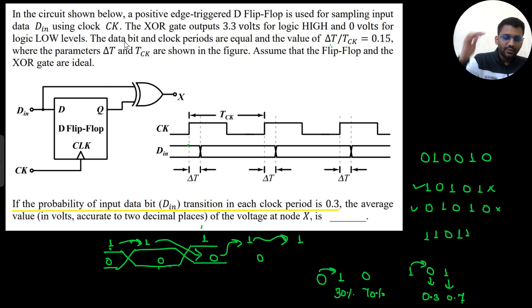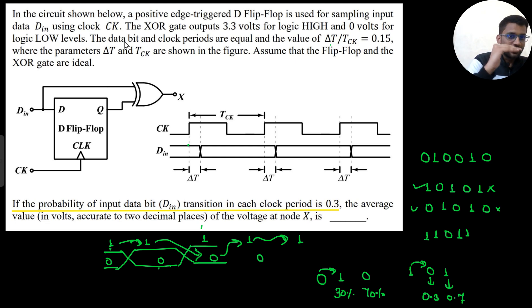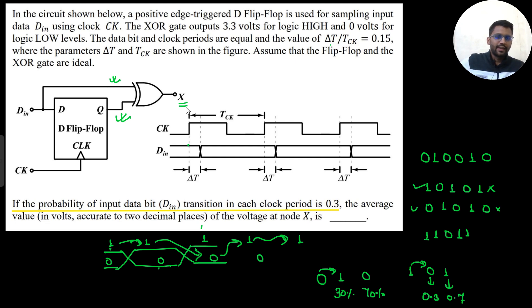A clock is given and data is coming — you don't know what the data is. It's not necessarily 1, 0, 1, 0 or 0, 1, 0, 1. But the probability of data transition is 0.3. The data input and the flip-flop output Y go into the XOR gate, giving output X. We need to find the average voltage value in volts at node X.